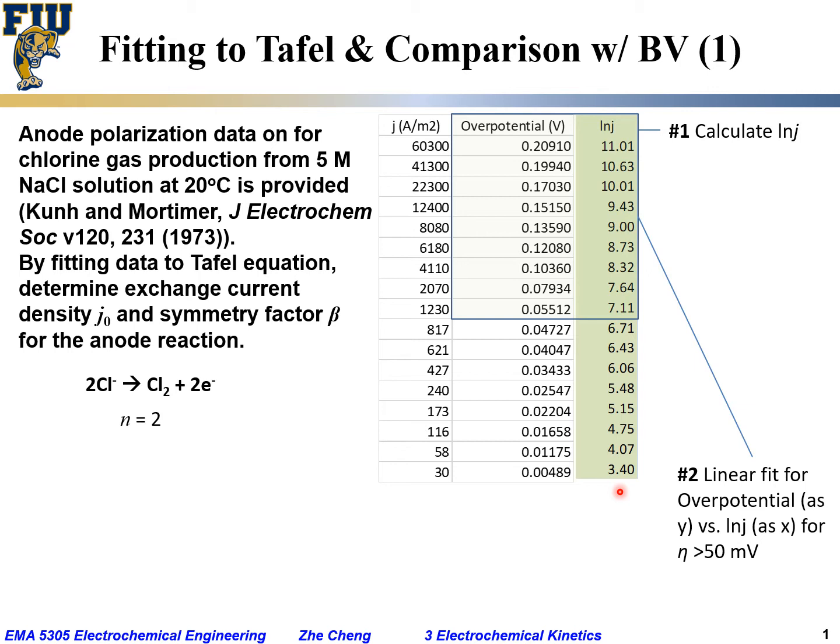And then, remember, it's a linear relationship for Tafel equation between overpotential and the natural log of current density. So in order to fit the data, we can do linear fitting. Linear fitting for overpotential here as the y dependent variable versus independent variable. Independent variable would be natural log of current density j, it will be x of the independent variable. So you do linear fitting.